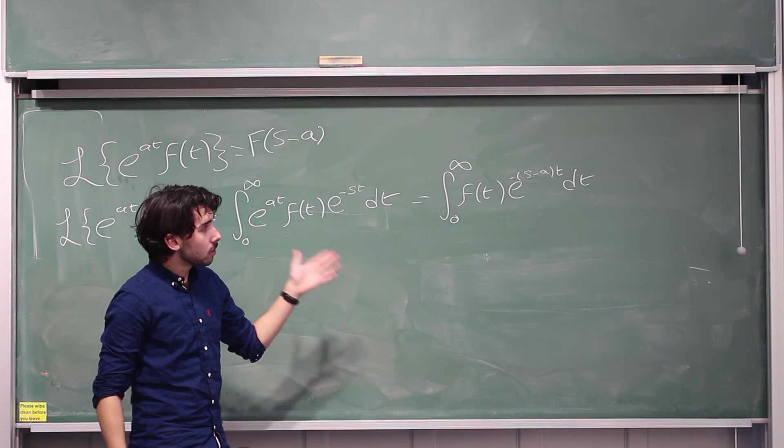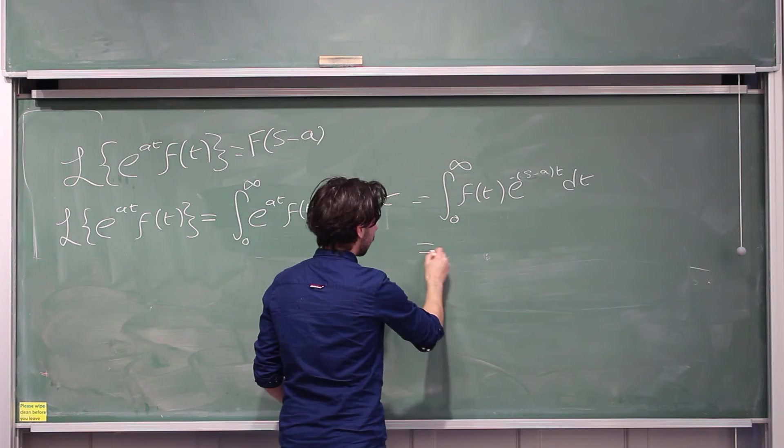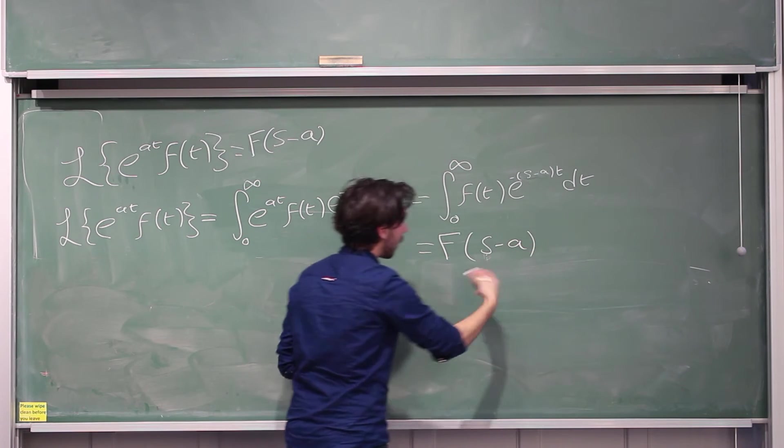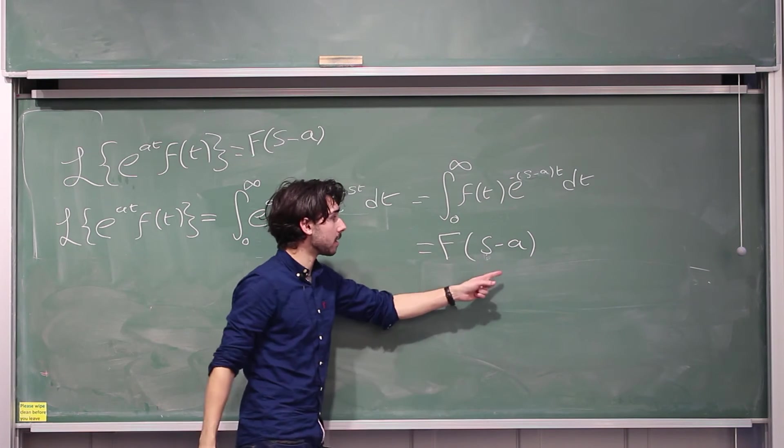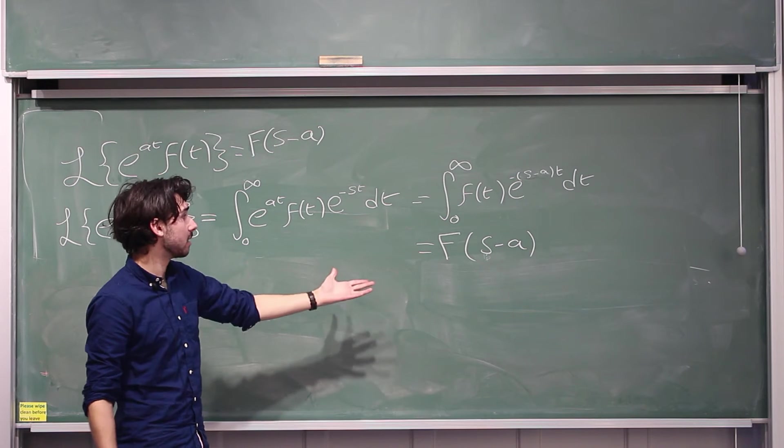Now, I don't know about you, that looks pretty familiar to me, this looks a lot like f of s minus a, right? Because f of s, there's an s here, f of s minus a, there's an s minus a there, and it's really that simple, that is it.